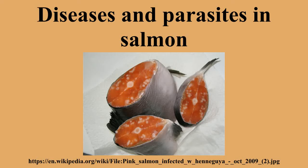In 1972, Gyrodactylus, a monogenean parasite, spread from Norwegian hatcheries to wild salmon and devastated some wild salmon populations. In 1984, infectious salmon anemia was discovered in Norway in an Atlantic salmon hatchery; 80% of the fish in the outbreak died. ISAV, a viral disease, is now a major threat to the viability of Atlantic salmon farming.